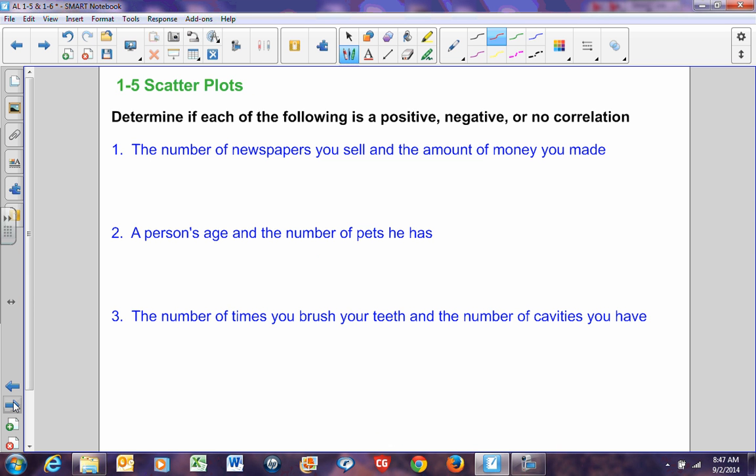Now, with scatter plots, you need to be able to determine if something is a positive, negative, or no correlation whatsoever. Let's take a look at a couple examples. Number one, the number of newspapers you sell and the amount of money you make.